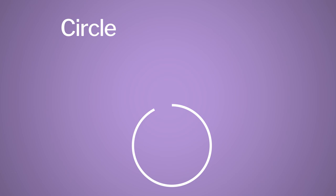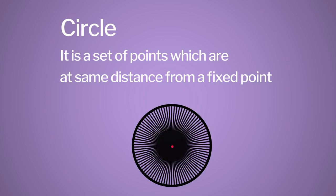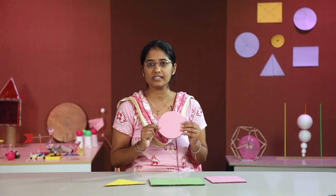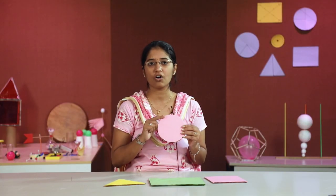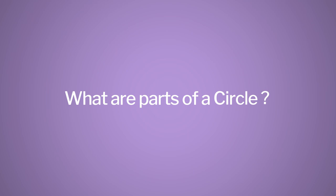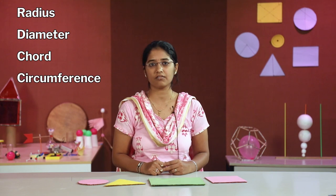The shape circle is a set of points which are at the same distance from a fixed point. The feature of a circle is that it does not have any corners or sides. This raises a question: if a circle does not have corners or sides, then what are the parts of a circle? A circle has different parts like radius, diameter, chord, and circumference.